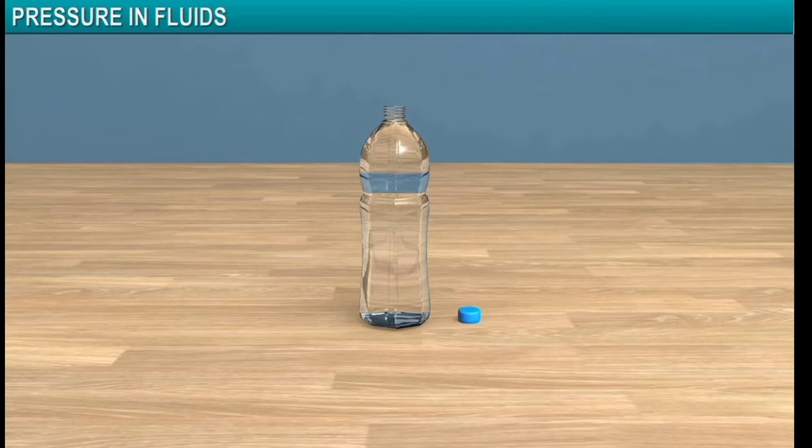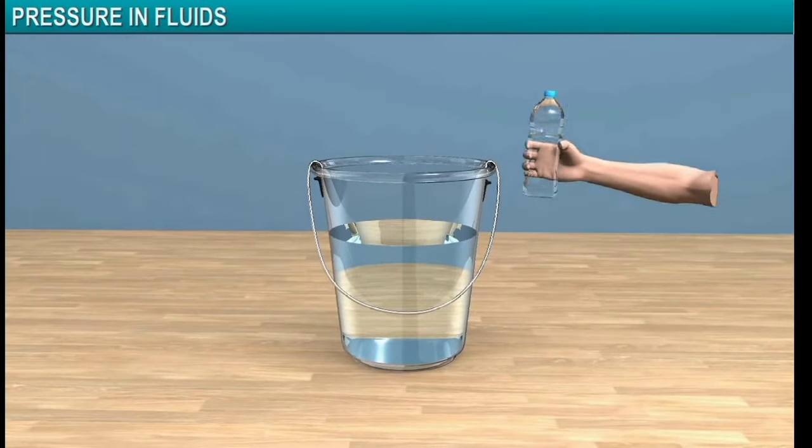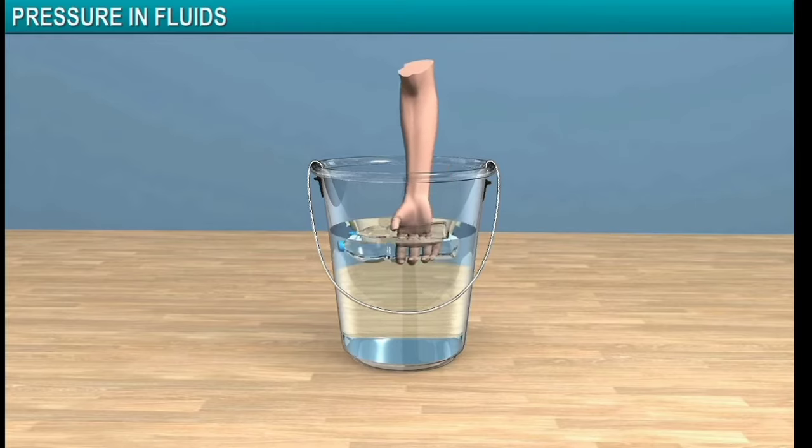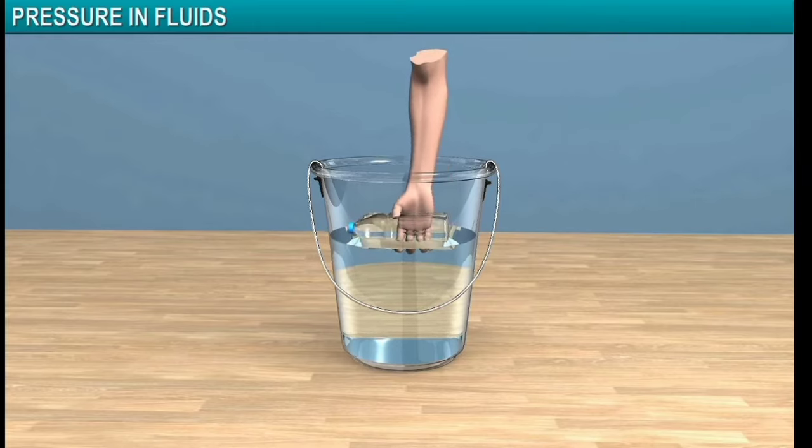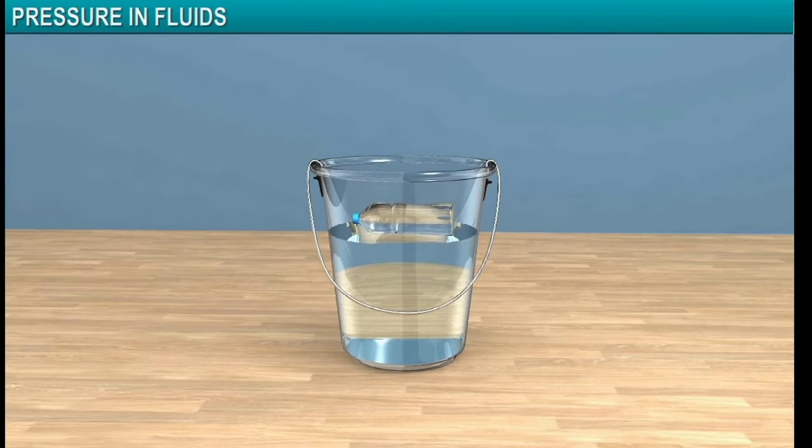Take an empty plastic bottle and close its cap airtight. Put the bottle in a bucket filled with water. Then, try to immerse the bottle in water. You'll observe that attempts to push the bottle down in the bucket are unsuccessful, and the bottle floats on water even though the density of glass is higher than that of water.